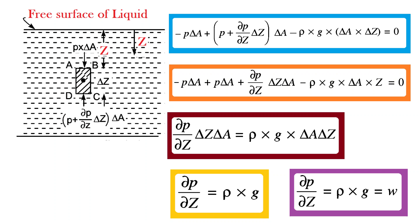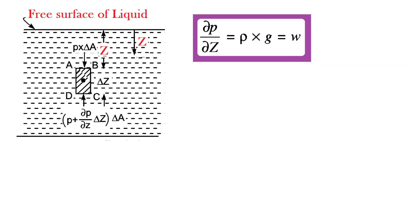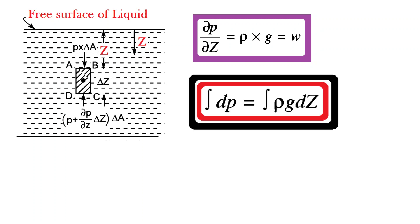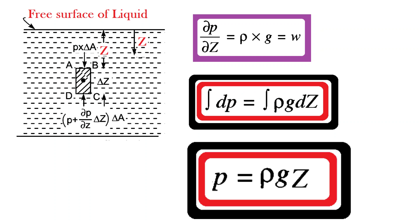This equation states that the rate of increase of pressure in a vertical direction is equal to the weight density of the fluid at that point. This is called the hydrostatic law. By integrating the above equation for liquids, integration of dP equals integration of rho G dZ. The integration of dP is P and the integration of dZ is Z, since rho and G are constant. So P equals rho G Z, where P is the pressure above atmospheric pressure and Z is the height of the point from the free surface. Thus we prove that P equals rho G Z.